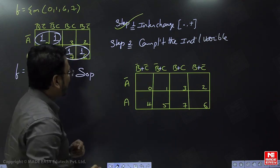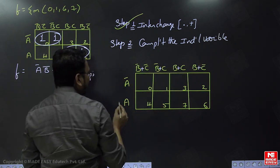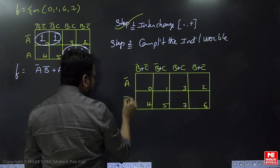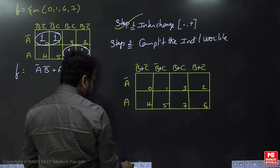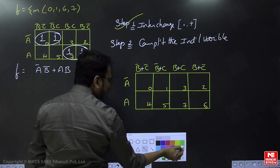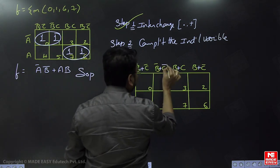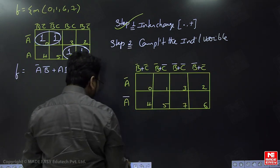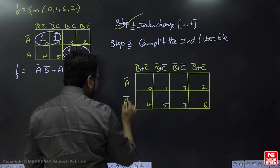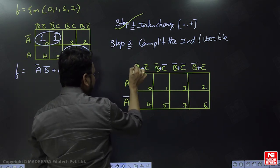Step two: complement the individual variable. I am marking this in another color — complement the variable here, here, here, here, and here. Previously wherever we had a bar we remove it, and wherever there was no bar we add it, shown in the new color.